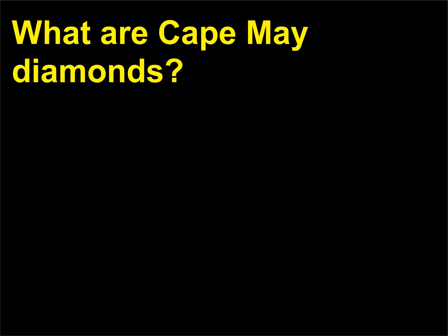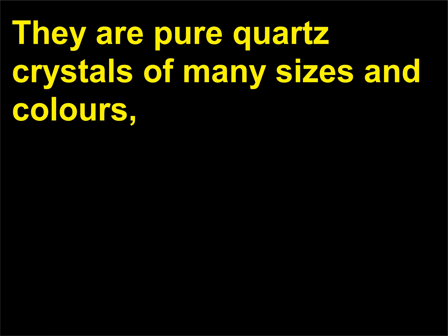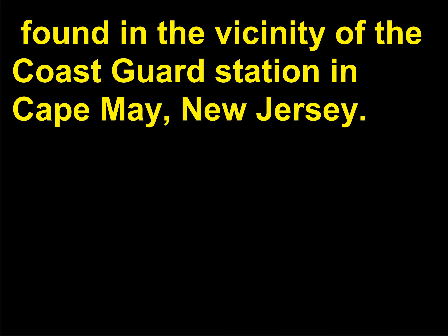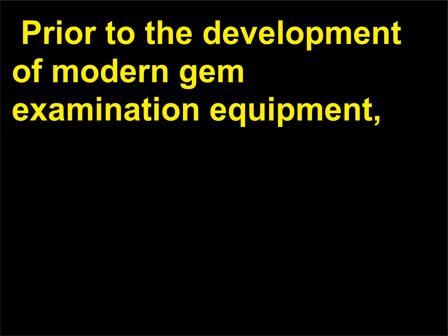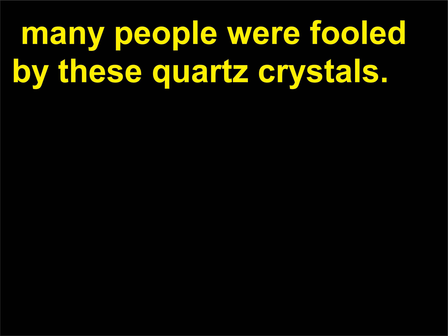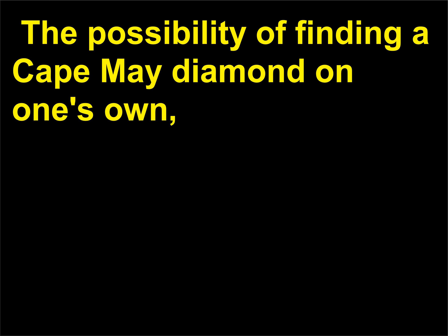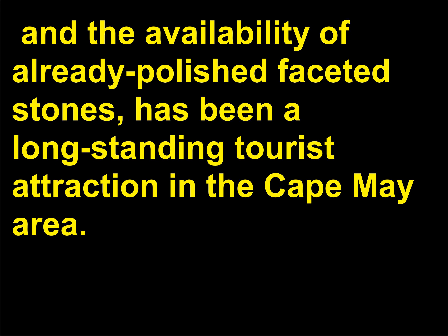What are Cape May diamonds? They are pure quartz crystals of many sizes and colors found in the vicinity of the Coast Guard Station in Cape May, New Jersey. When polished and faceted, these crystals have the appearance of real diamonds. Prior to the development of modern gem examination equipment, many people were fooled by these quartz crystals. The possibility of finding a Cape May diamond on one's own and the availability of already polished faceted stones has been a long-standing tourist attraction in the Cape May area.